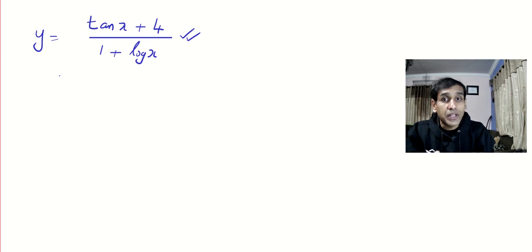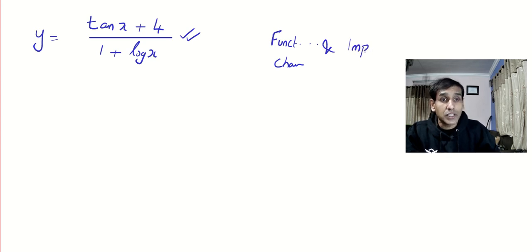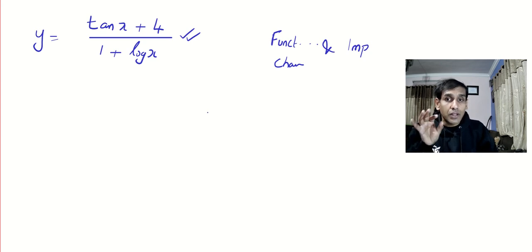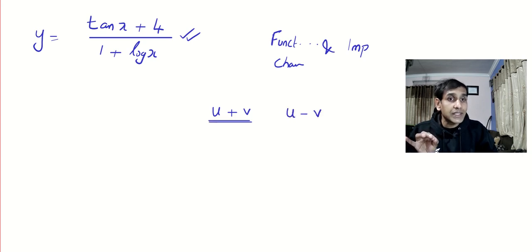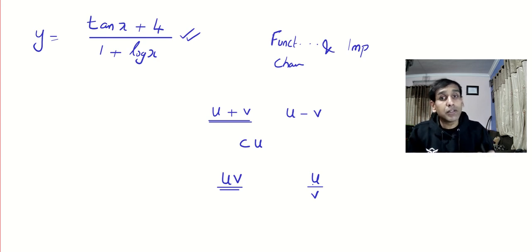I'll wind up the video now and be back with the next one. In the next video we learn something very important: function of a function, also called the chain rule, and we will also cover implicit functions. I want you to be very good with the basic differentiation — differentiating functions separated by plus or minus, constant multiplied by function, the product rule, and the quotient rule. Take any book you like and practice lots of similar questions. See you in the next video — bye!